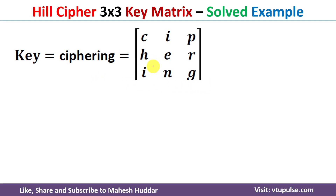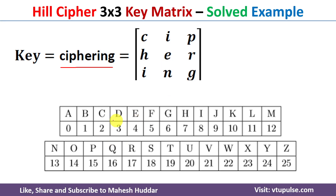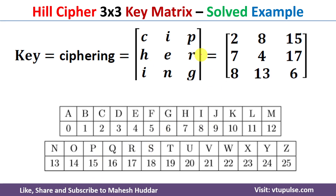Before encryption, we need to get the key matrix. The key given to us is 'ciphering'. Since we have 9 characters, we convert them into a 3×3 matrix: 'CIP' in the first row, 'HER' in the second row, 'ING' in the third row. For each letter we assign a numeric value using the table where A=0 and Z=25. So C=2, I=8, P=15, and so on, giving us the key matrix.